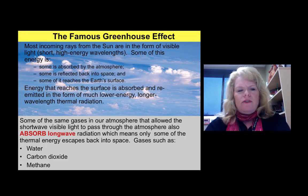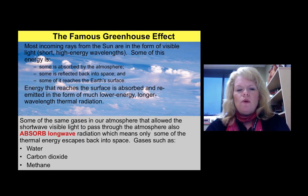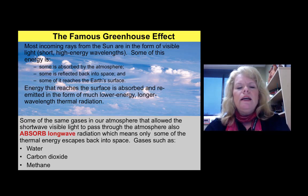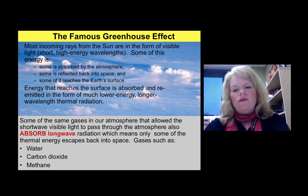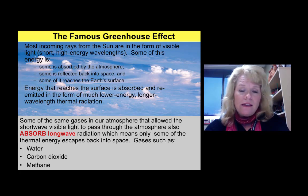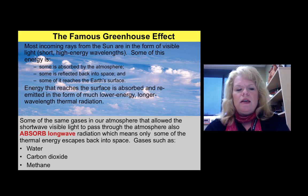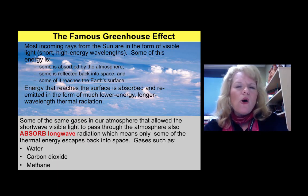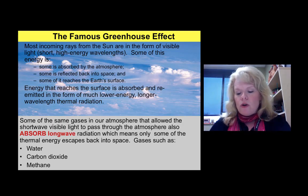Most incoming rays from the sun are in the form of visible light. Energy that reaches the Earth's surface is absorbed and re-emitted in the form of lower energy, longer wavelength thermal radiation. These long-wave radiations are where certain greenhouse gases take effect, because they absorb so much more heat. The three key greenhouse gases are water vapor, carbon dioxide, and methane — those are the main ones.